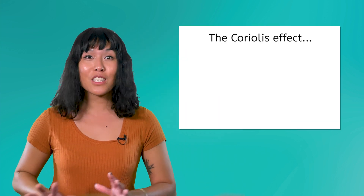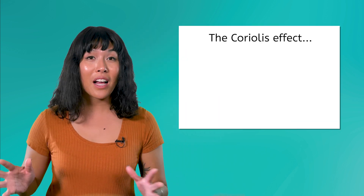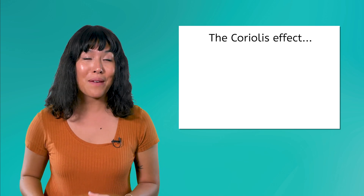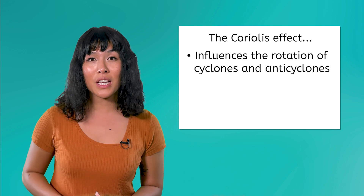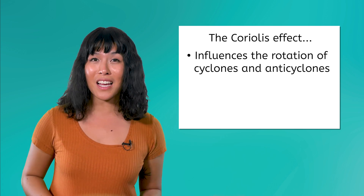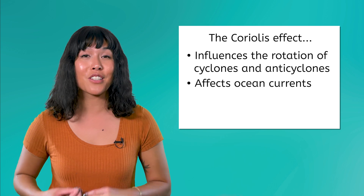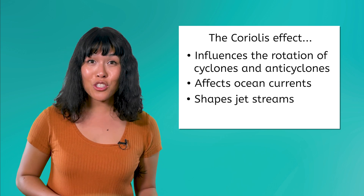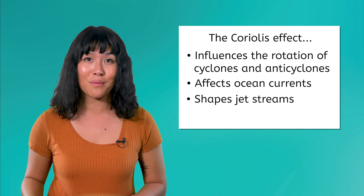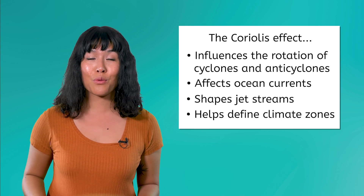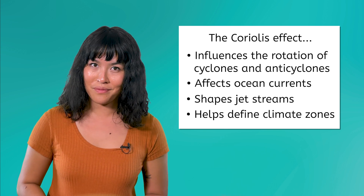Atmospheric circulation and the Coriolis effect have a big impact on weather and climate. The Coriolis effect deflects wind directions, shaping global wind belts and impacting climate patterns. But it also influences the rotation of cyclones and anti-cyclones, affects the ocean currents that distribute heat globally, shapes jet streams that steer weather systems, and helps define climate zones through the distribution of heat and moisture. The Coriolis effect is crucial for comprehending how these dynamic systems interact to create the diverse weather and climate patterns we experience around the world.